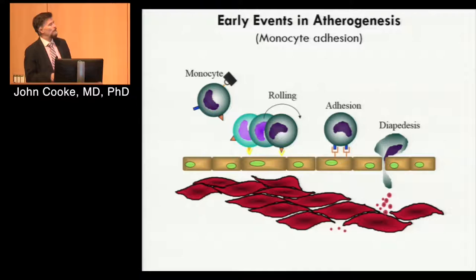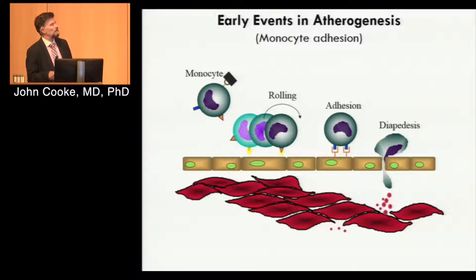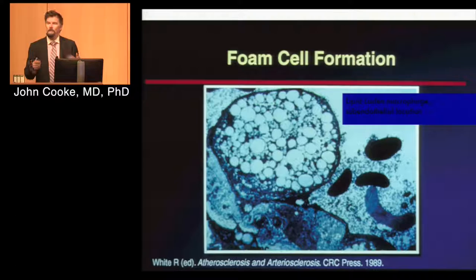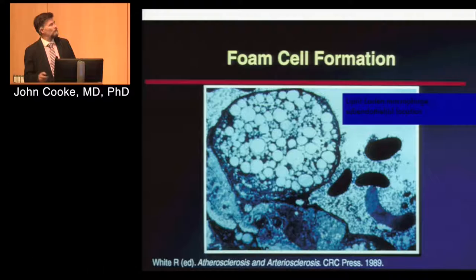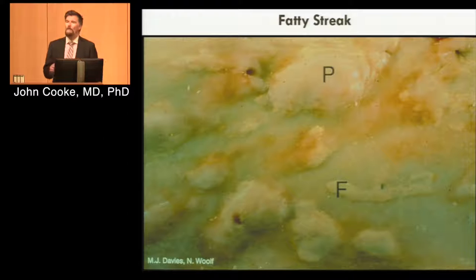If someone has high cholesterol, they end up accumulating cholesterol in their subintimal space. It becomes oxidized over time, and it becomes seen as non-self, attracting this inflammatory response. Once inside the subintimal space, the macrophages do what they're supposed to do: absorb the oxidized LDL cholesterol. But if your cholesterol is not treated, you continue to bombard the subintimal space with cholesterol. These foam cells — macrophages loaded with lipid — accumulate more and more lipid and become stuck in that subintimal space.